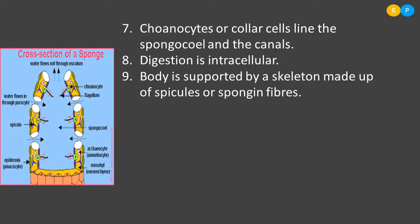The body of the sponge is supported by a skeleton made of spicules. Spicules are spine-like structures that give proper support to the body and provide the animal its shape. You can see spicules labeled in the diagram as the blue-colored structures just behind the collar cells.